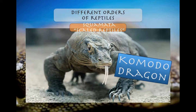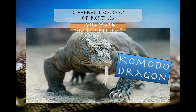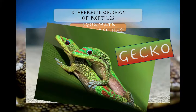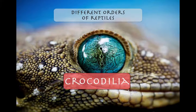Continuing on with Squamata — you have your Komodo dragons, your Gila monsters, and geckos.